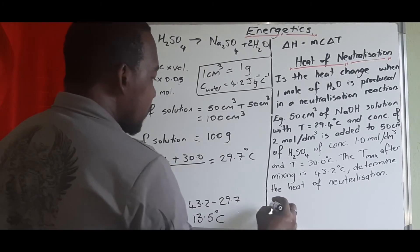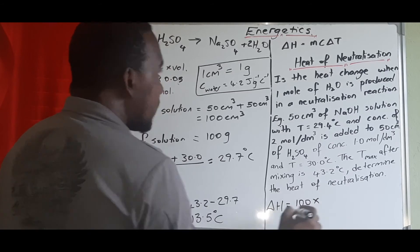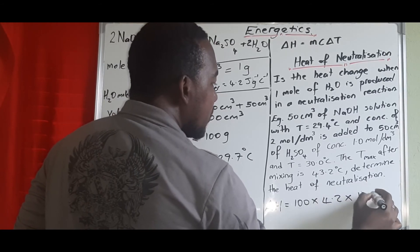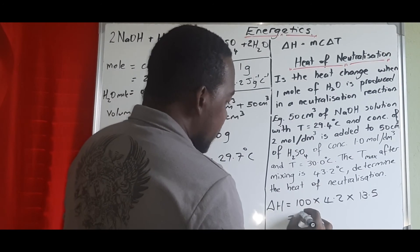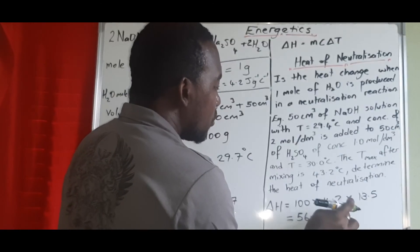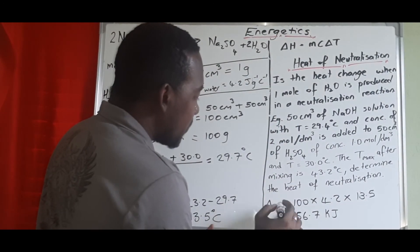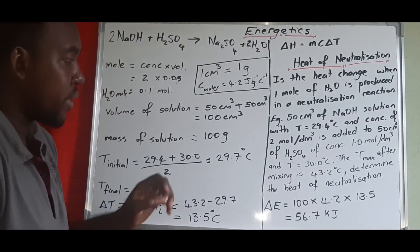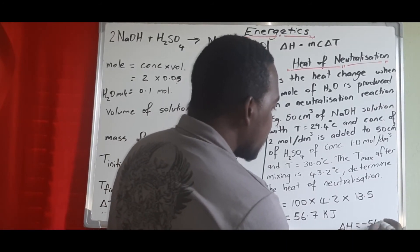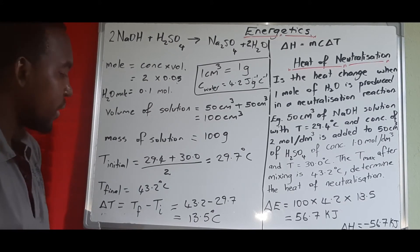Now we have all the values and can find the heat of neutralization. ΔH = m × c × ΔT = 100 × 4.2 × 13.5 = 5670 J = 56.7 kJ. The enthalpy change is written as −56.7 kJ.